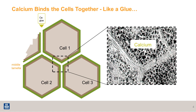Here, in the electron microscopy, you can see cells being bound together by calcium. And in the case of calcium deficiency, the bonding of these cells can be weakened.